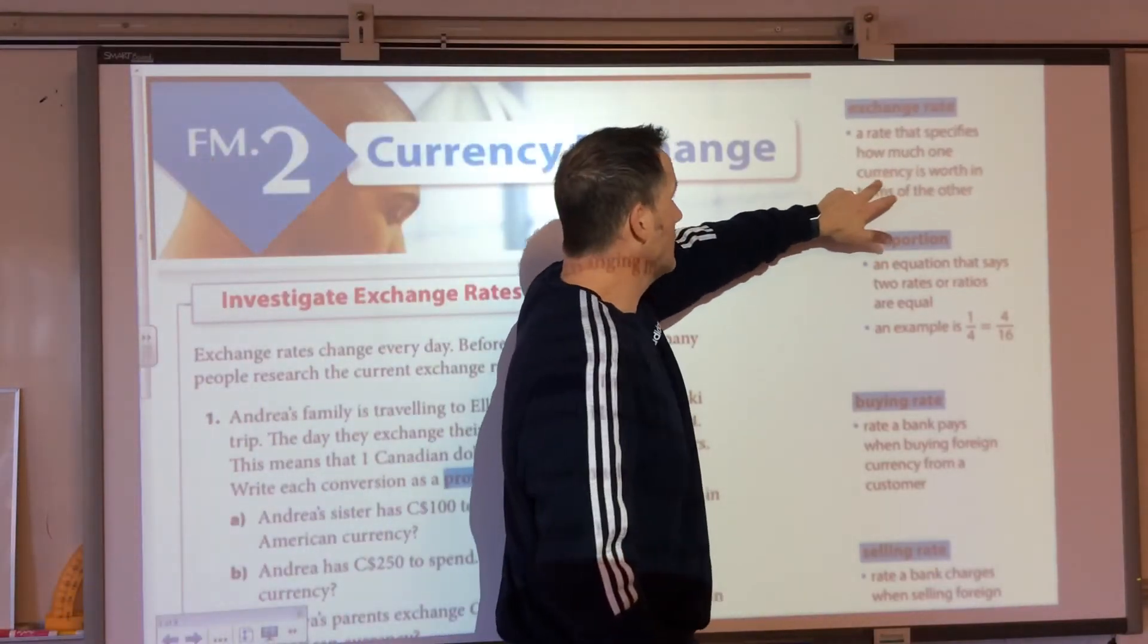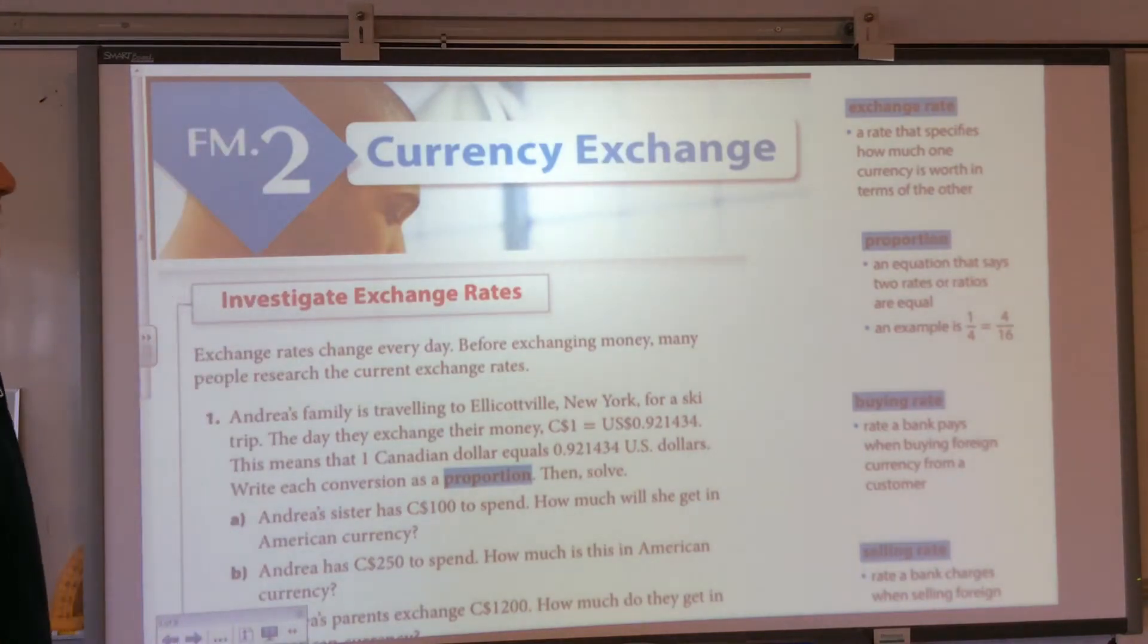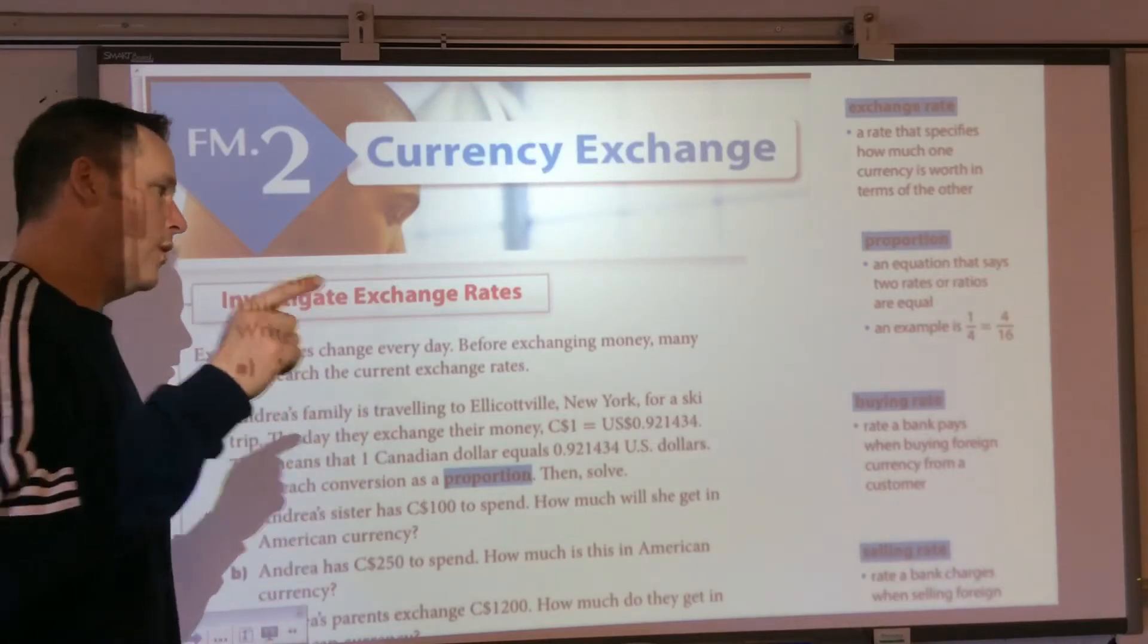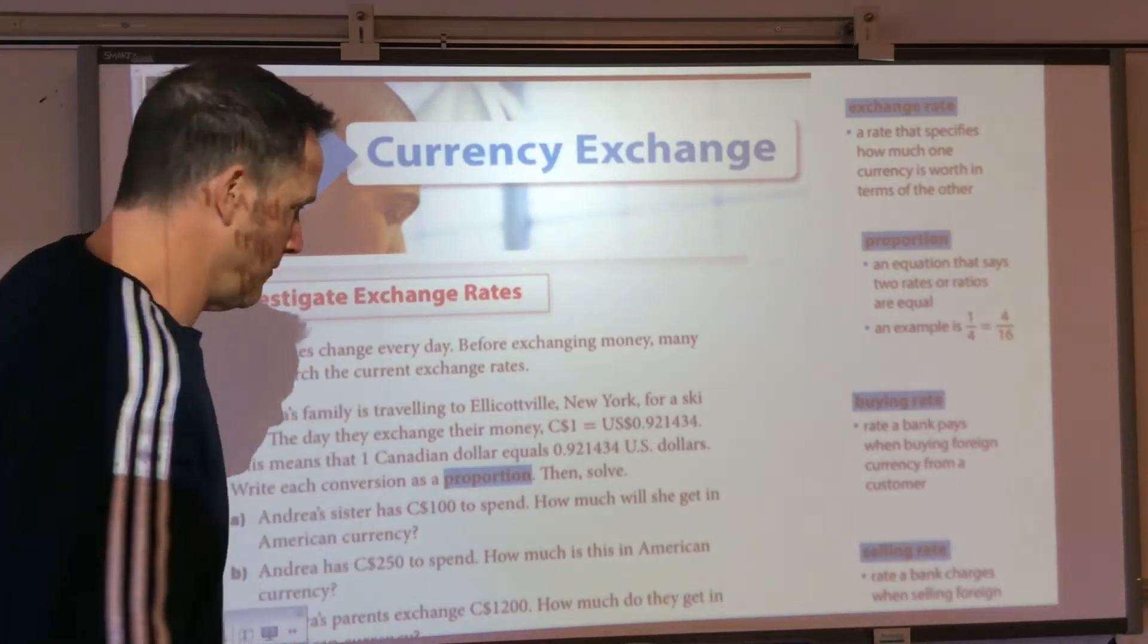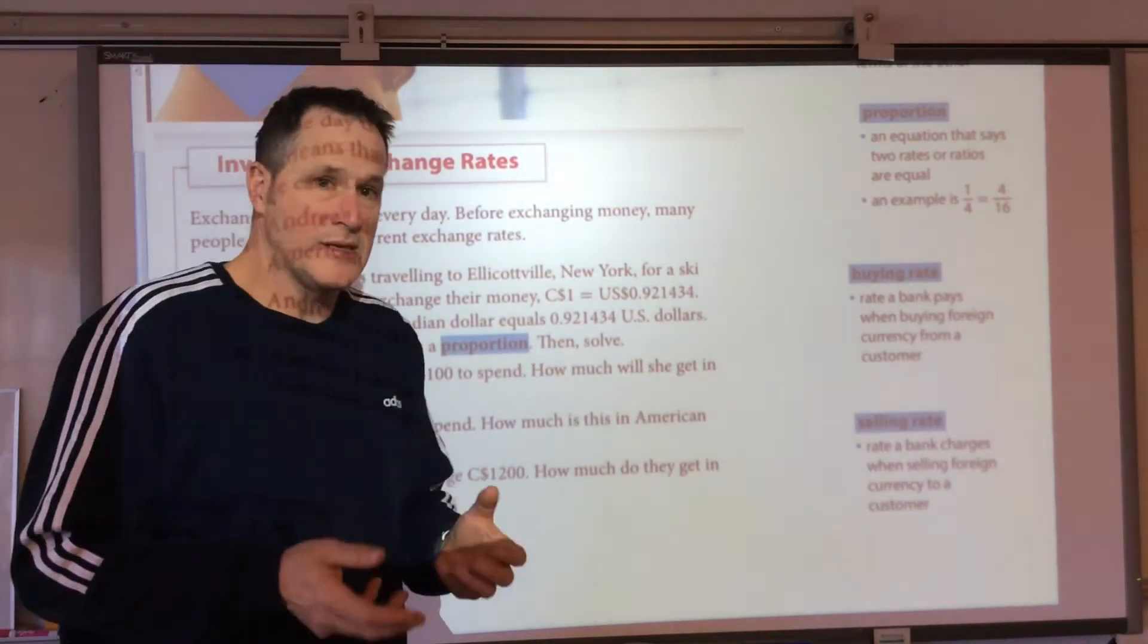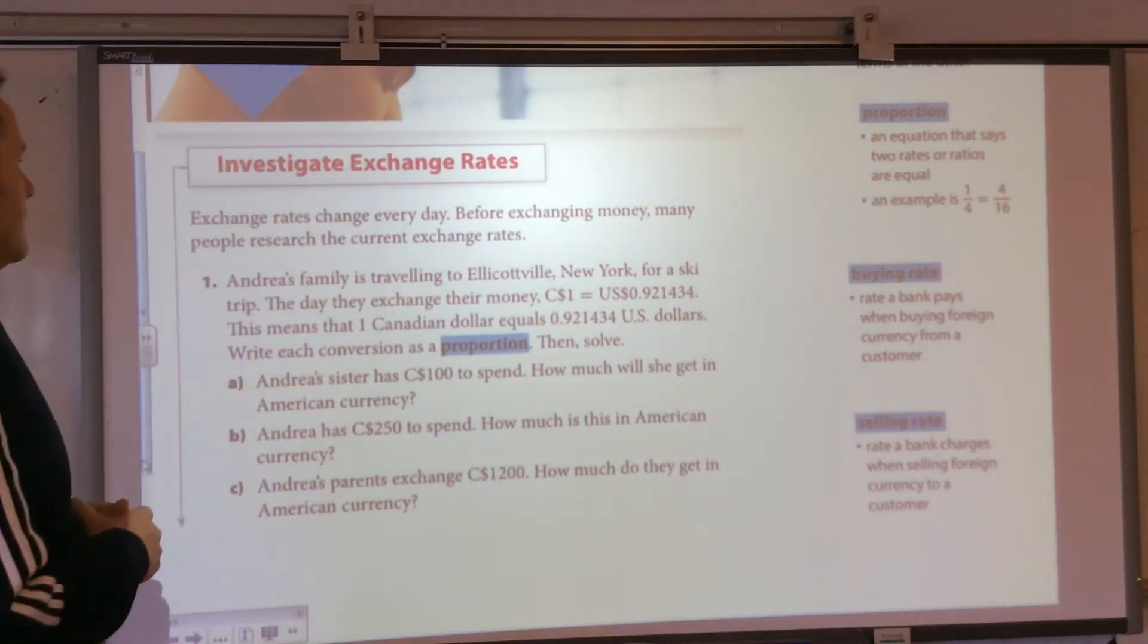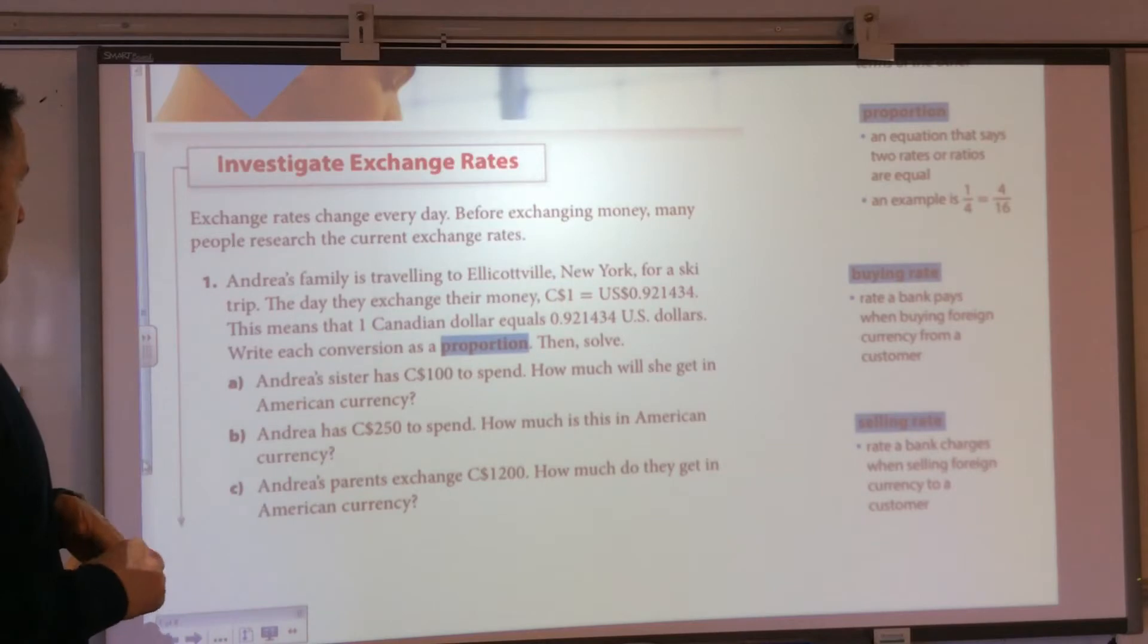First couple terms we need to know about. We have our exchange rate, a rate that specifies how much one currency is worth in terms of the other. Proportions are how we set it up. It's the easiest way to set it up. Buying rate, a rate a bank pays you when buying foreign currency from you. And then there's what's called the selling rate. The selling rate is what the bank sells the foreign currency to you for.